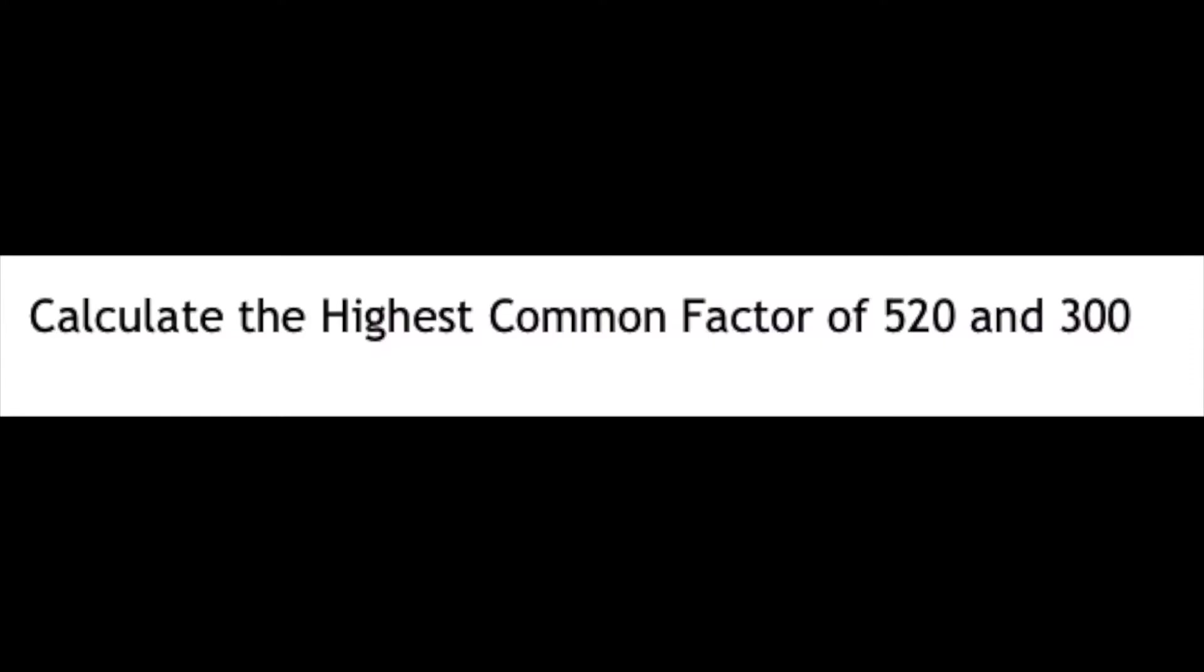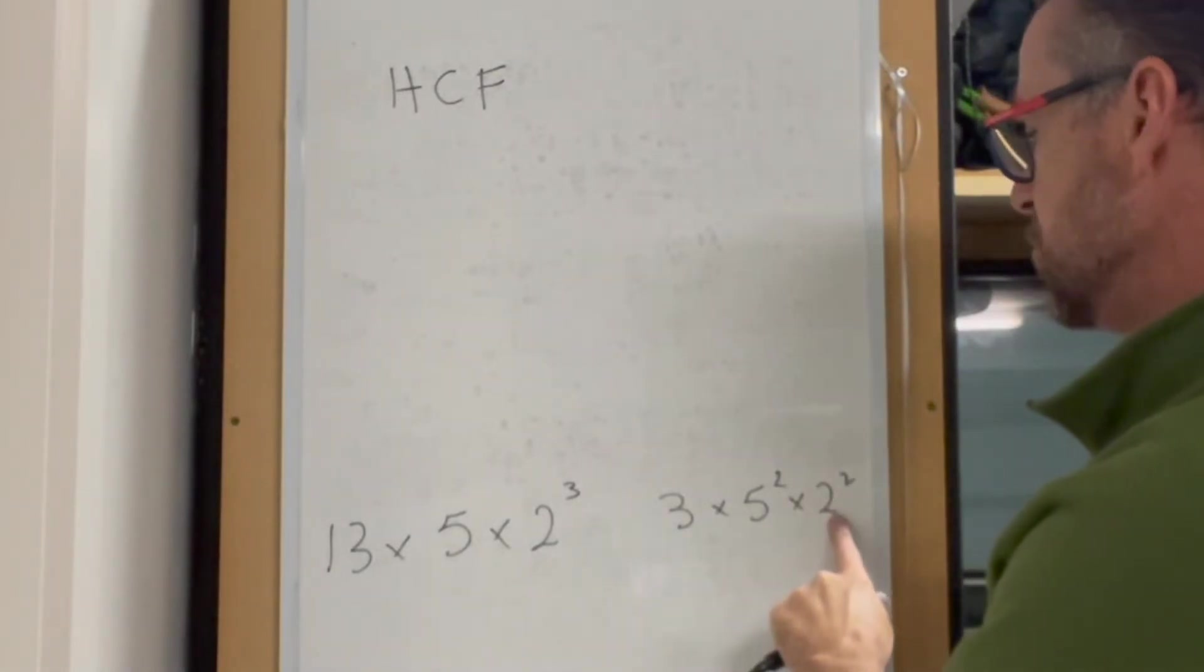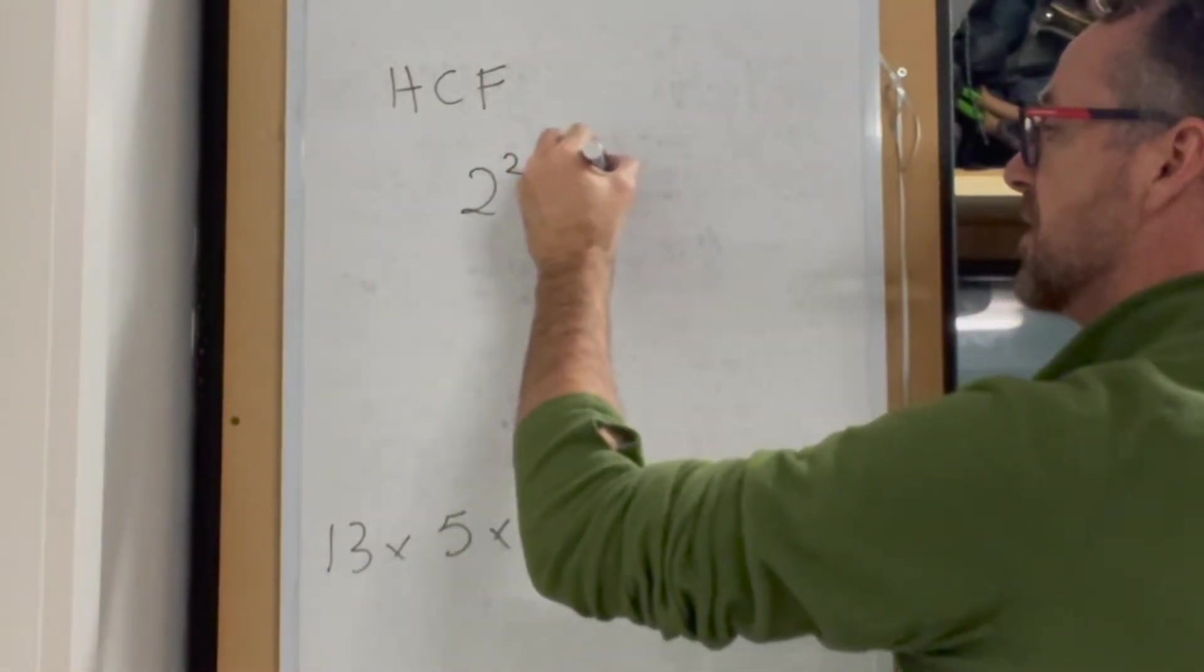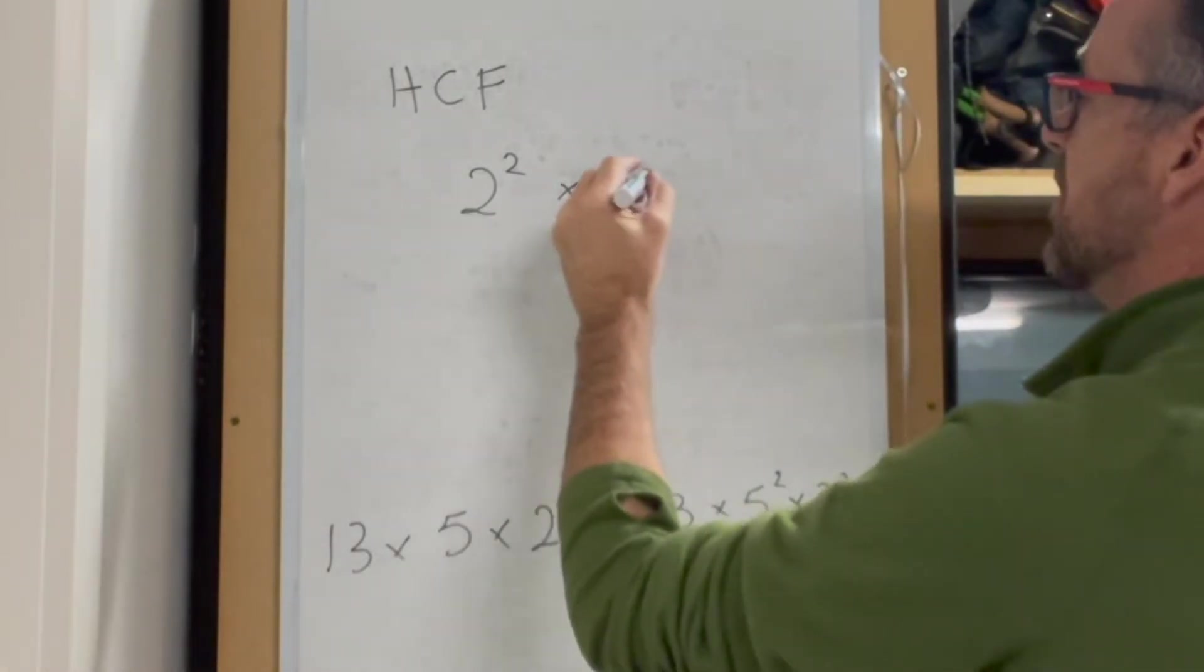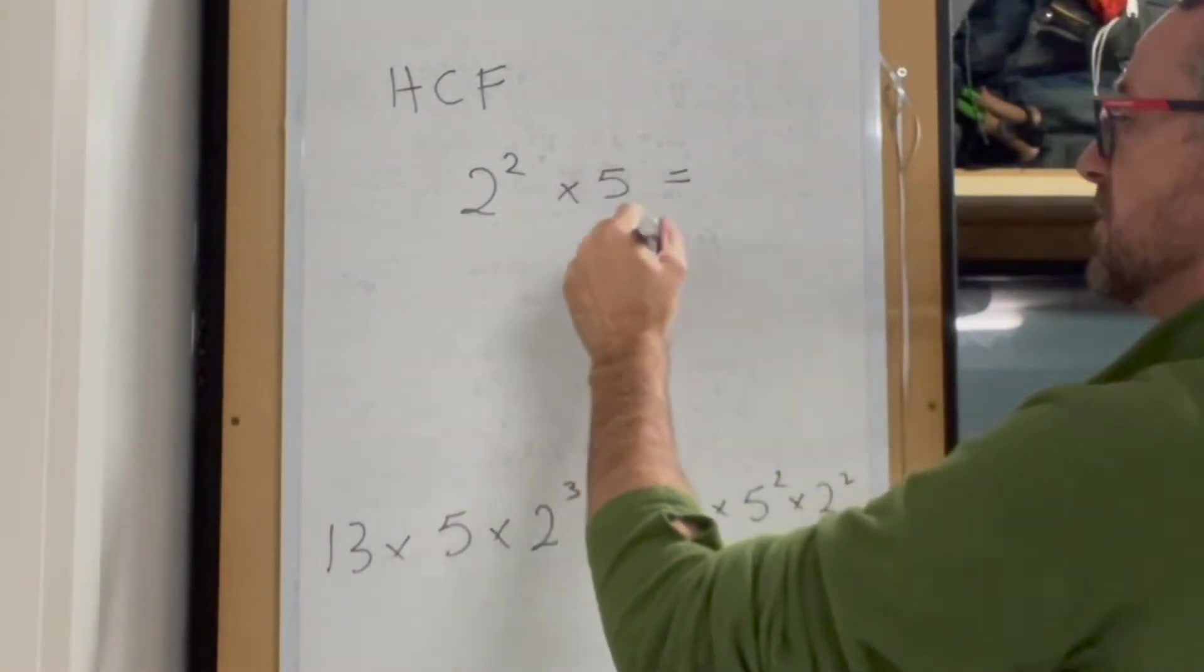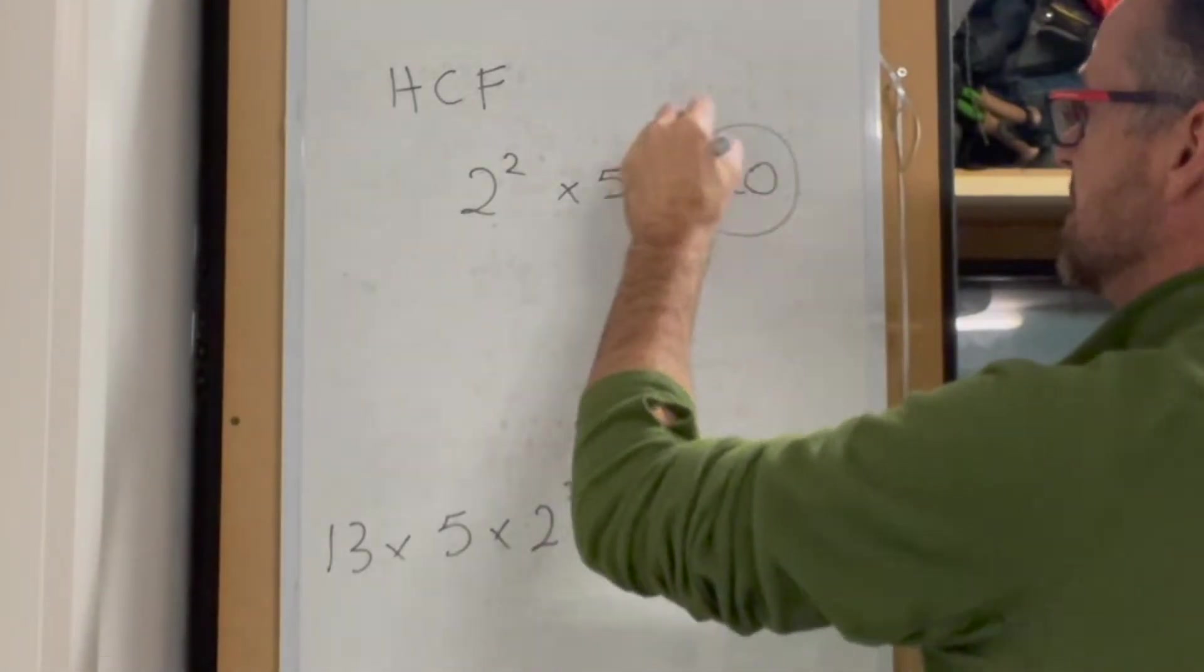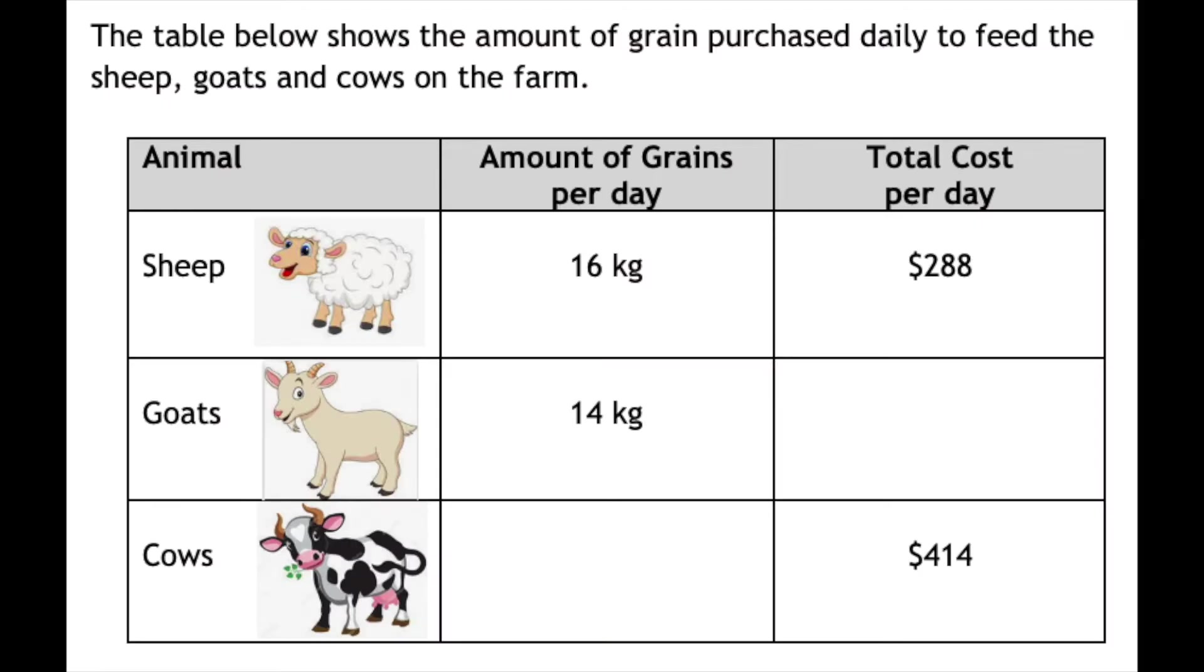Now for the highest common factor, we pluck out things common to both. We see 2 squared appears in both, and 5 appears in both. So 2 squared times 5 - that's 4 times 5 - equals 20. So 20 becomes our HCF for 520 and 300.